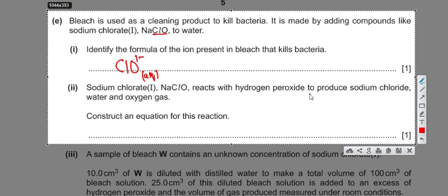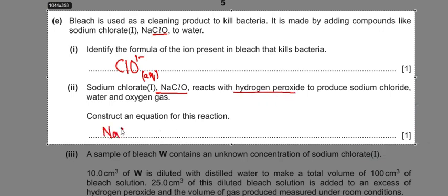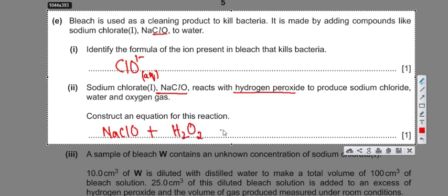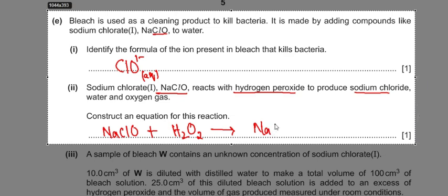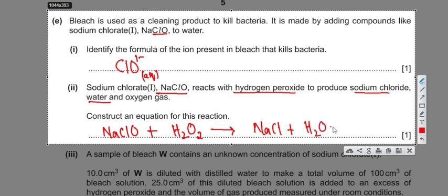The next part asks for an equation for the reaction of sodium chlorate(I) with hydrogen peroxide. The reactants are NaClO and H2O2. These react to produce NaCl, water (H2O), and oxygen gas (O2). The equation is perfectly balanced — no changes needed. Keep this equation in mind as it is needed for the next part.